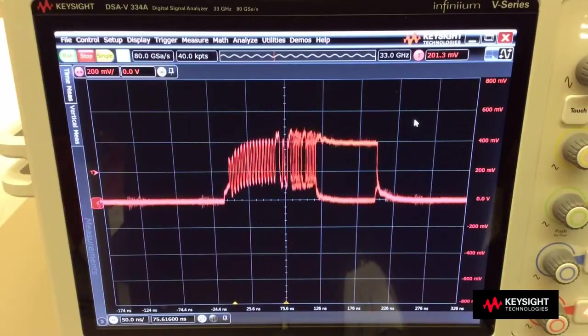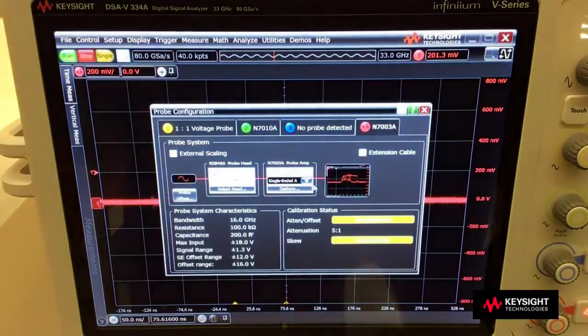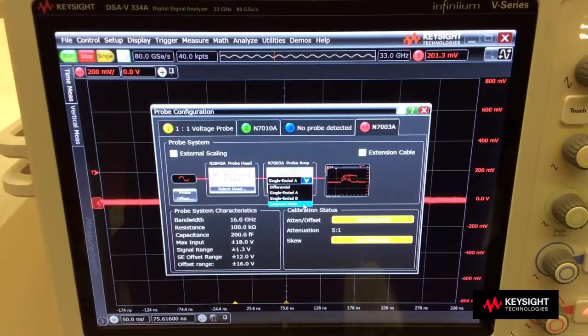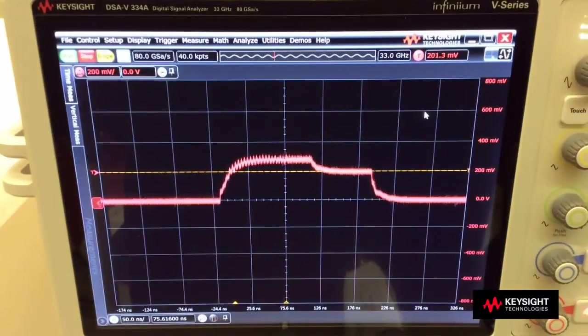What if I want to look at common mode? Again, I can go to the probe configuration menu and select the common mode feature. So the probe is now taking the common mode measurements of the A and B signals that are going into the probe.